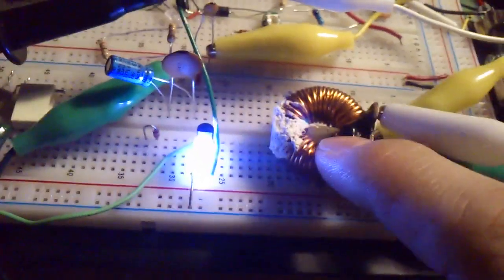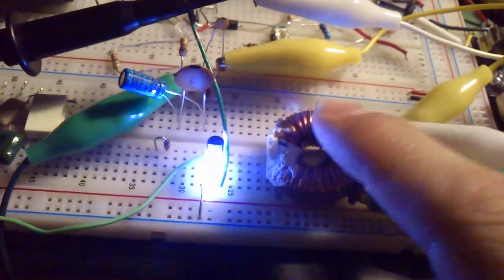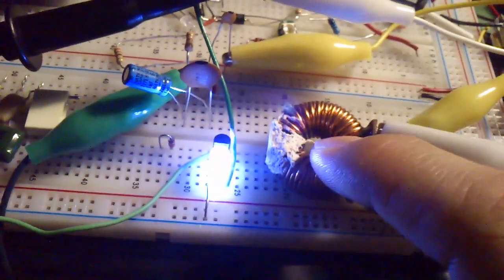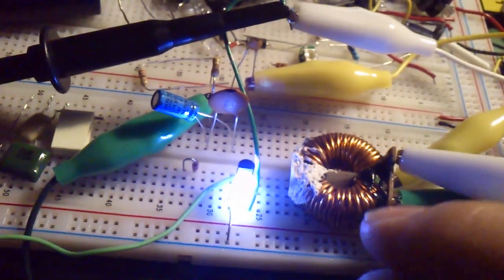Also keep in mind, the smaller the gauge you use, the less amount of energy you can get out of those. So this is important if you plan on building something that uses extremely high energy pulses or stuff like that.